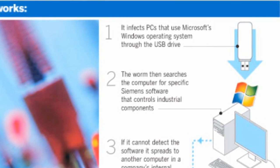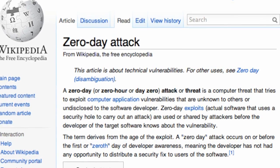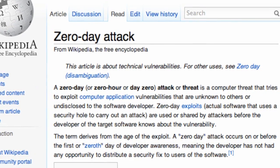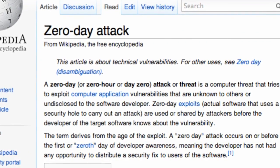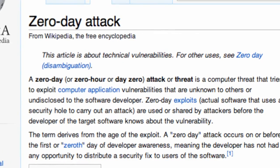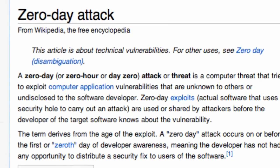The first thing that separates Stuxnet from other worms is that it infects vulnerable systems using four zero-day attacks. Zero-day attacks refer to software vulnerabilities that are new and unknown. This is the first time so many different vulnerabilities were used in one single attack.